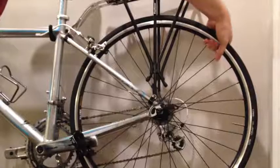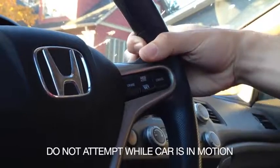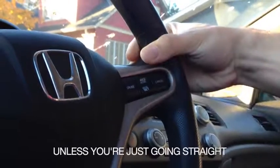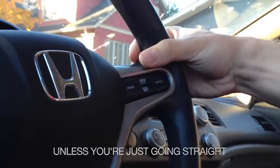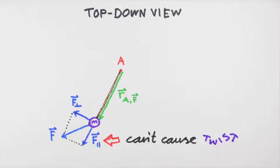You can test this yourself. Try turning a wheel—say a bicycle wheel or the steering wheel of a car—by pushing or pulling directly toward or away from the center of the wheel.